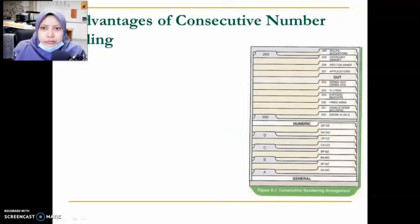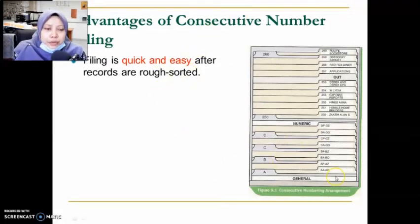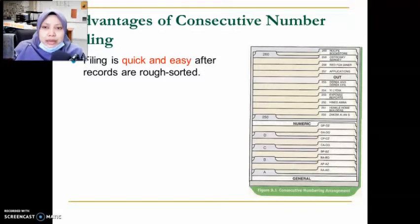When we talk about advantages, the first is that filing will be quick and easy after we do a rough sort. When we put records in rough sorted order, we arrange them alphabetically, but we also assign each record a number. When the record has a number, the numbers make it easier for us to do sorting.